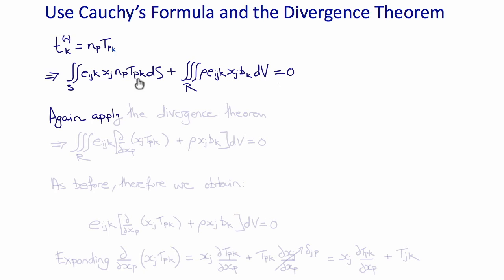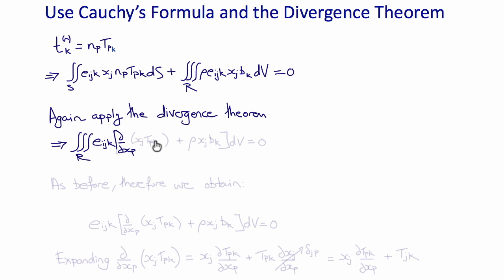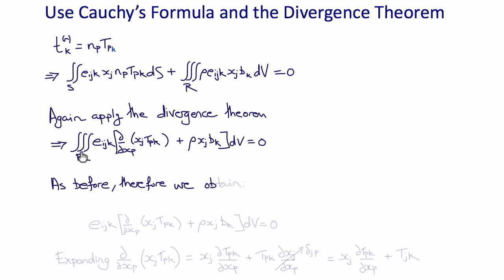Applying the divergence theorem to the surface integral of Np Tpk, the first term becomes the volume integral over R of Eijk times ∂/∂xp of (Xj Tpk). The second term remains rho Eijk Xj Bk. Combined into a single volume integral, and using the arbitrary region argument, the integrand must be zero, giving: Eijk times ∂/∂xp (Xj Tpk) plus rho Eijk Xj Bk equals zero.